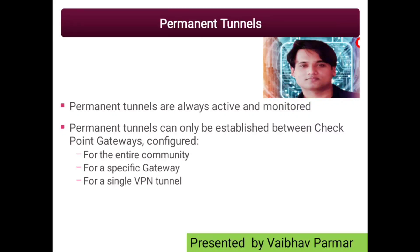Each VPN Tunnel in a community may be set as a Permanent Tunnel. Since Permanent Tunnels are constantly monitored, if a VPN Tunnel fails for some reason, a log alert or a user-defined action can be triggered. A VPN Tunnel is monitored by periodically sending tunnel test packets. As long as responses to those packets are received, the VPN Tunnel is considered up. If no response is received within a given time period, the VPN Tunnel is considered down.